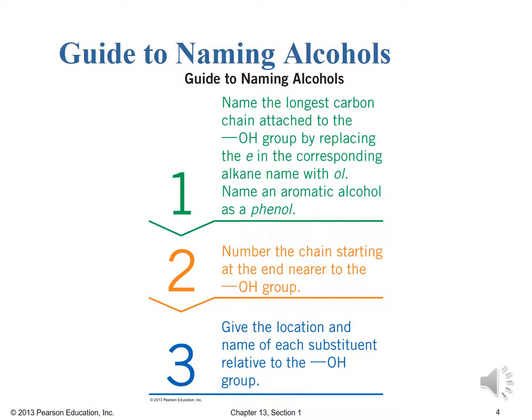Next, we number the chain starting at the end nearest to the OH group, so we want the OH group attached to as low a number carbon as possible — ideally a terminal carbon. Finally, we give the location and name of each substituent relative to that OH group. Once we hit three carbons, we have to specify position: in a three-carbon chain, we could have 1-propanol at a terminal end or 2-propanol in the middle.